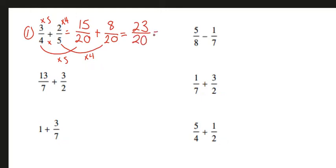We can change this improper fraction to a mixed number. 23 goes into 20 one time, and there will be a remainder of 3 over 20. For number 2, we have 5 over 8 minus 1 over 7.